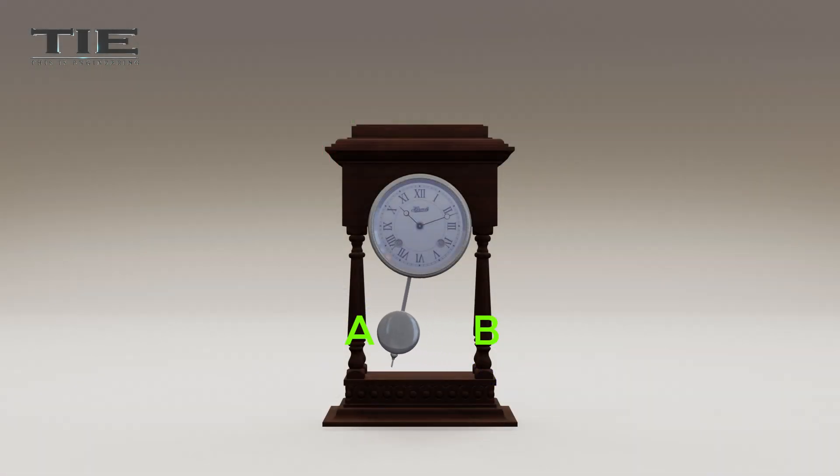A pendulum in a clock swings back and forth. The pendulum moves from position A to B and B to A. This is also motion.